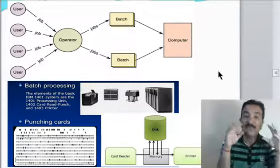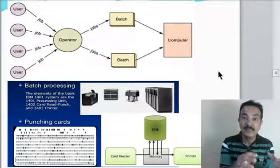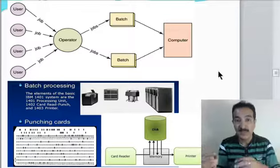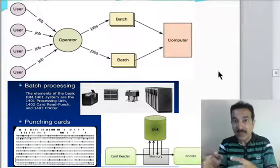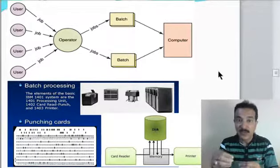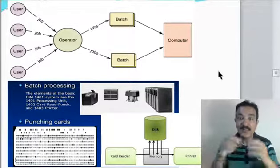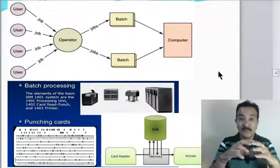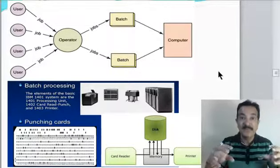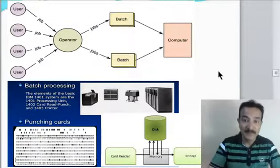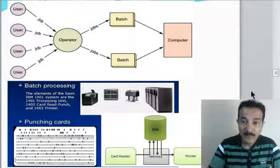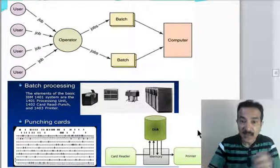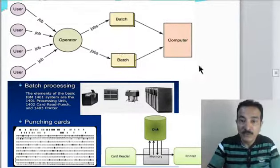Then the second batch work was given. The data captured from the punch cards was printed onto magnetic tapes. From the magnetic tape, the computer would pick up the data, do the calculation, and print the pay slip to the printer.